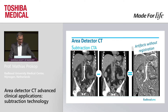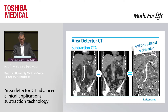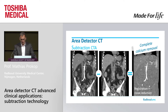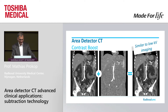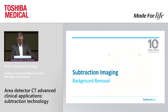Subtraction CTA, as I said, is just subtracting the pre-contrast from the post-contrast. But if you do that, you get artifacts thanks to motion. So you do need registration and ideally noise reduction. By doing so, we get an image that provides us without any bones — calcium is completely removed, including the calcifications in the vessel wall. And by adding this image to the original one, we actually get a contrast-boosted image very closely related to what we know from the monoenergetic images from dual energy.